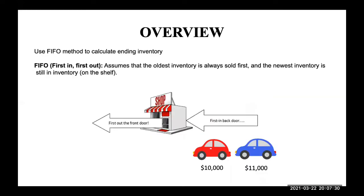We will now shift our focus to FIFO. So what is FIFO? FIFO is when we assume that the oldest inventory is always sold first, and the newest inventory is still in inventory, on this shelf. This method takes the cost of the item's first purchase — which is first in — and assigns the cost to the first good sold, which is first out. The value of the inventory remaining is calculated based on the items purchased last, the newest items.